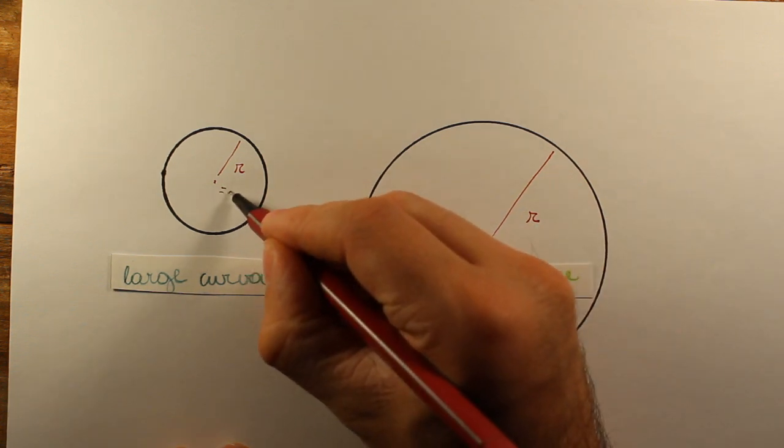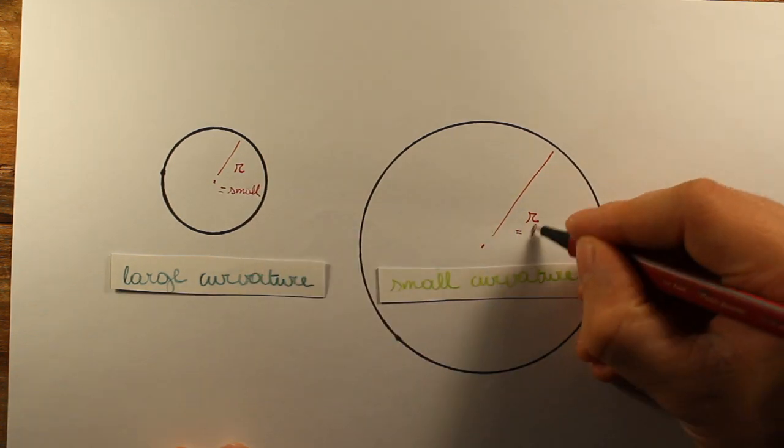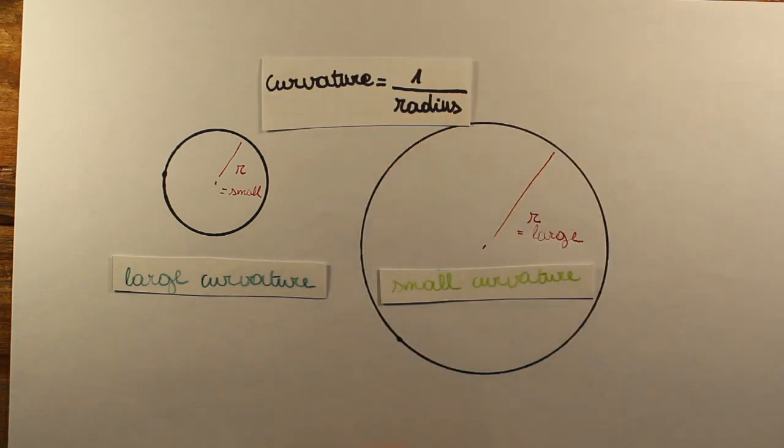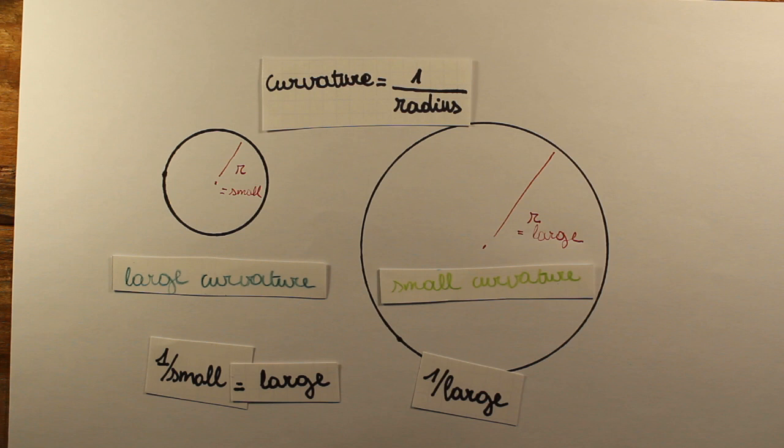Since the size of a circle is determined by its radius, we can define the curvature of a circle as 1 divided by the radius. So, the small circle has a small radius, and 1 divided by a small number is large, so the curvature is large. Conversely, this circle has a large radius, and 1 divided by a large number is small. So the curvature is small. Therefore, this seems like a good definition.